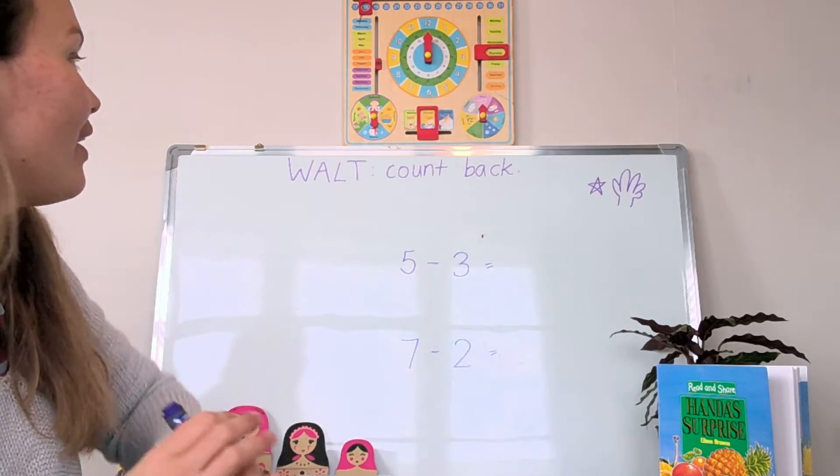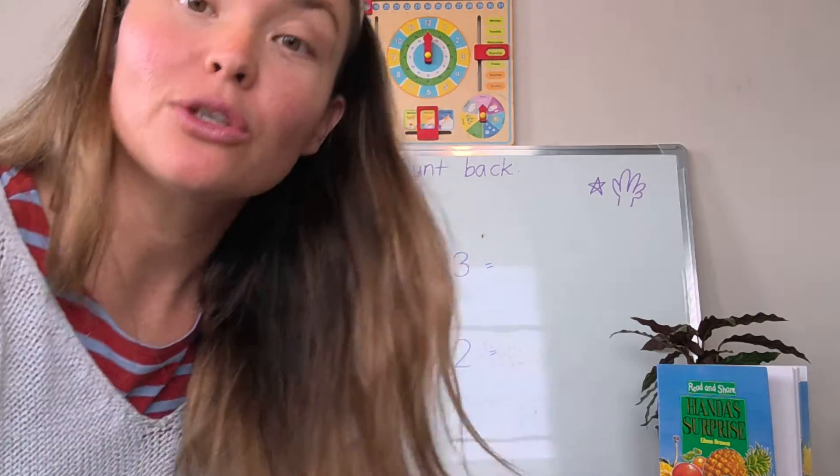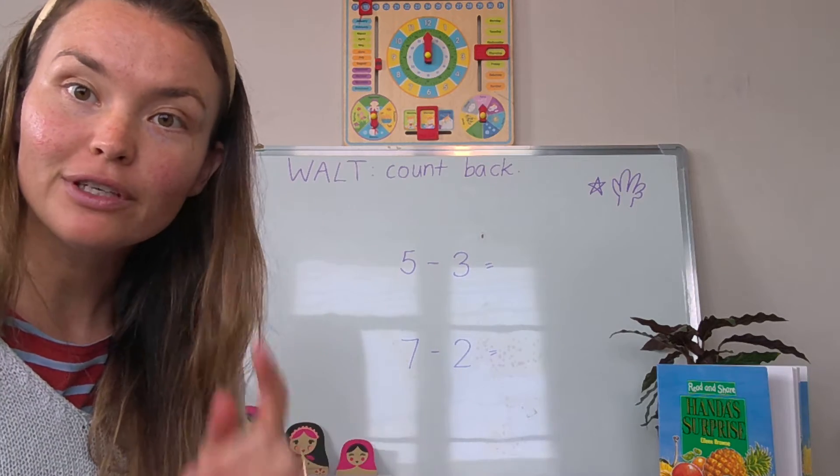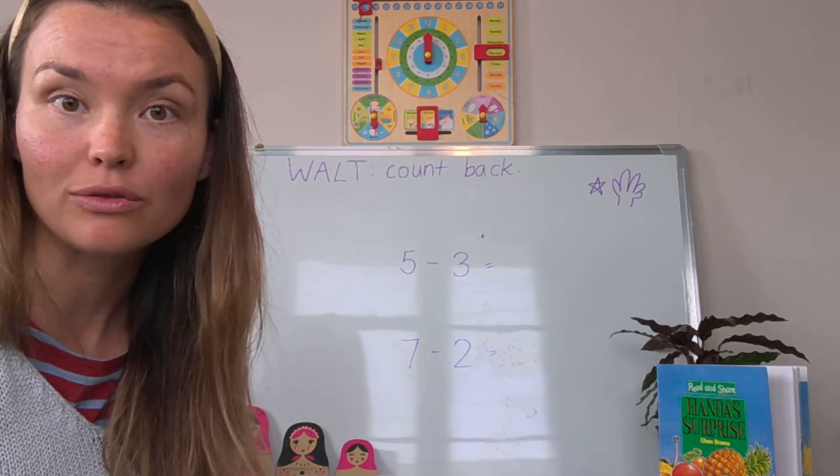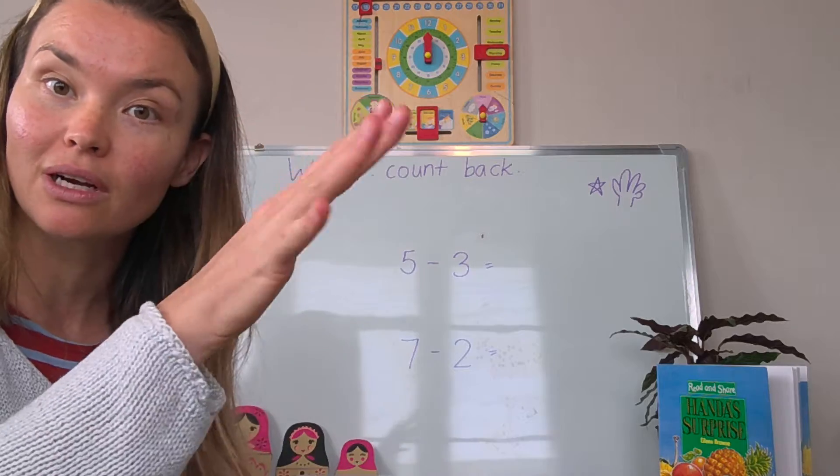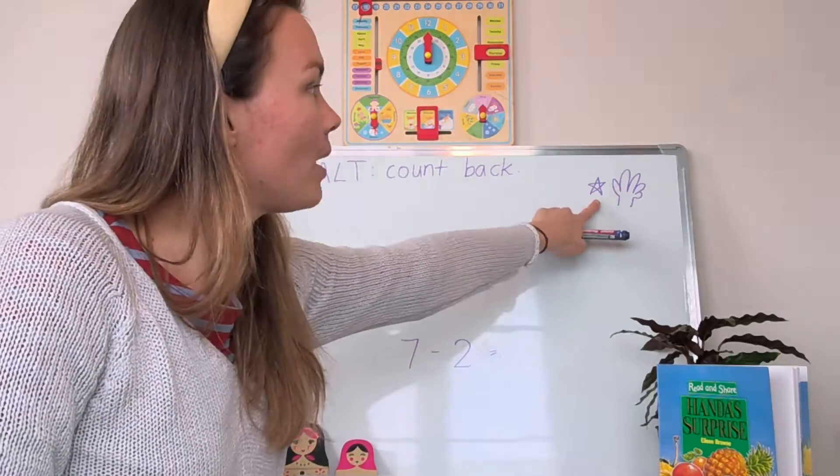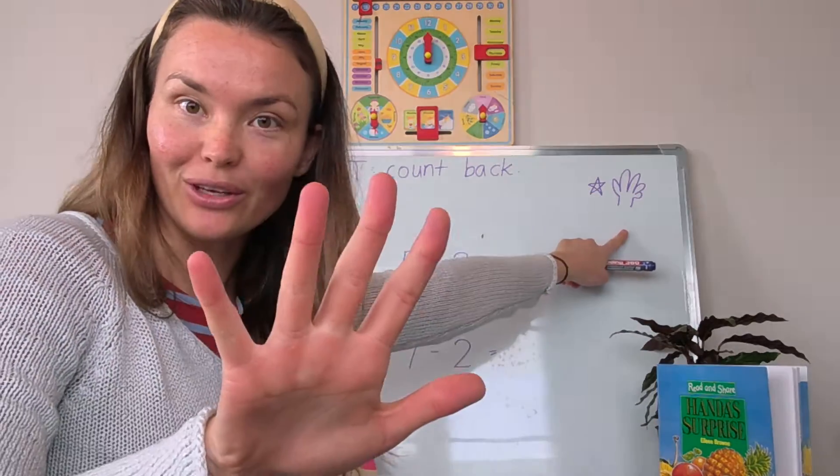Now the problem we're going to solve is quite a simple problem. The first strategy we can use for counting back is to use our hands. It is the one star challenge using your hands.